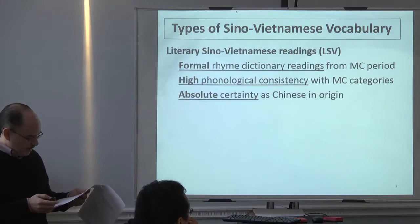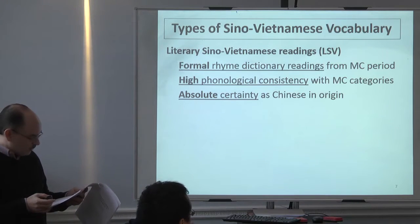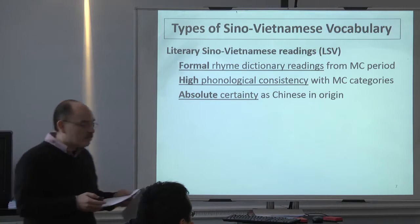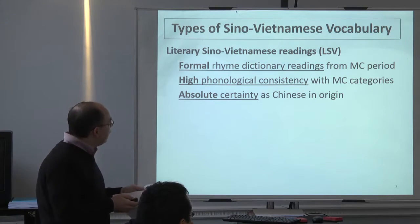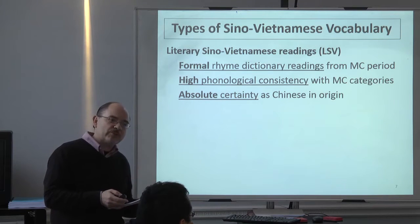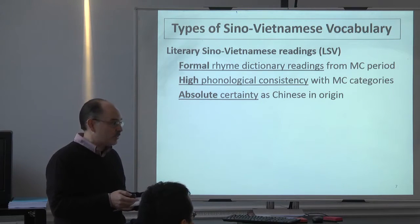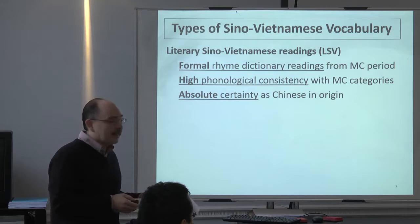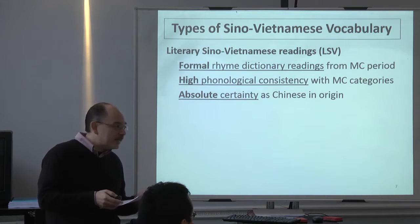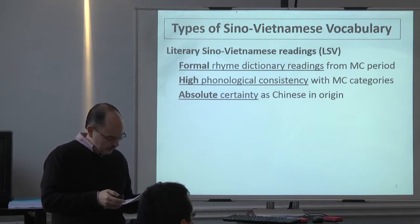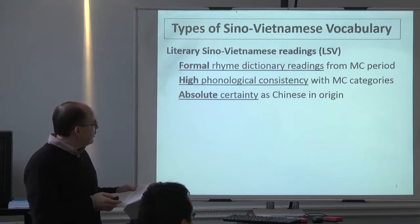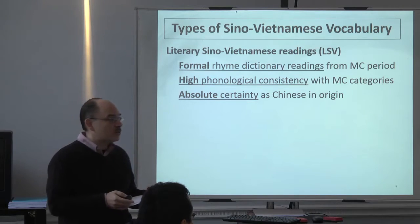As Audricourt claimed, the lexical evidence shows Chinese cultural influence. This influence led to massive linguistic restructuring throughout the Sinosphere. We don't focus on literary Sino-Vietnamese — generally when people say Sino-Vietnamese, that's what they mean. I'll use the shorthand LSV for literary Sino-Vietnamese, or late Sino-Vietnamese, in contrast with early Sino-Vietnamese. LSV is very formalized, with high phonological consistency and absolute certainty — you can check it in a dictionary and know it's Sino-Vietnamese.